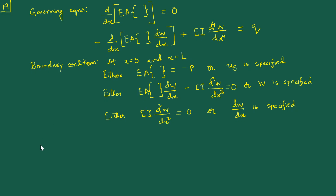First, consider a rod, beam, or column like this where one end is free and the other end is clamped. This is just an illustrative case with this kind of load — it is very much a specific example of the general situation we had been dealing with. You can have transverse or lateral loads also present, but I'm considering a very simple case here.